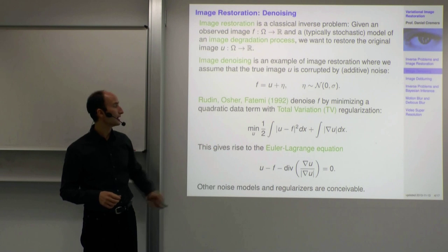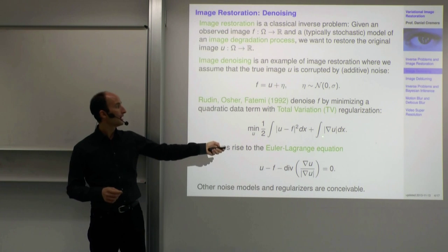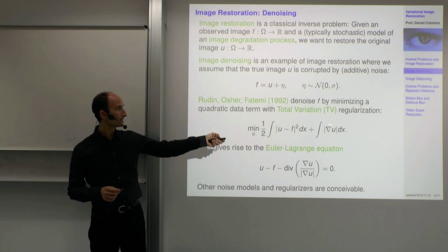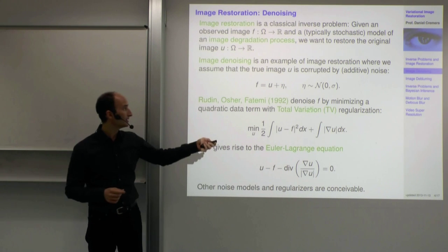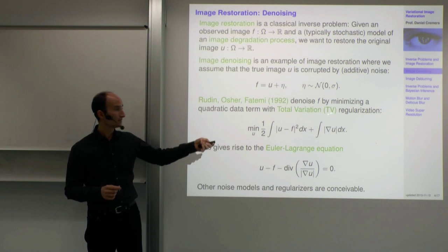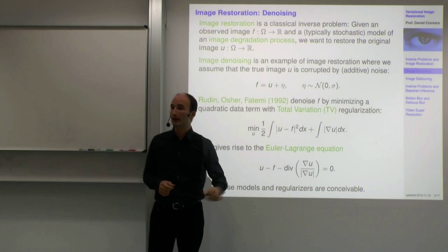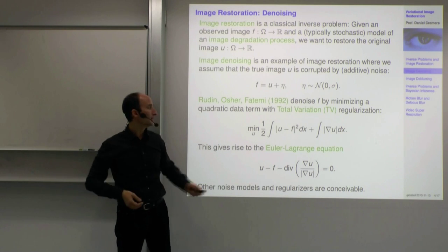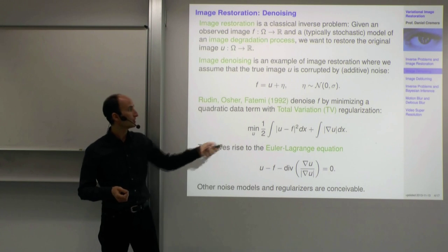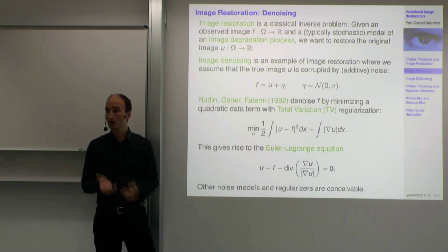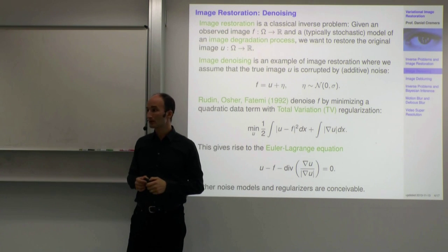It has a quadratic data term, and in contrast to what we discussed before, a regularity term called the total variation. This regularizer is extremely popular, and one reason is that it's convex — this norm is a convex function, and the integration is a summation of convex functions, so the overall expression is convex in U. The data term is also quadratic and convex, so the overall cost function is convex, which means we can minimize it globally. Setting up the Euler-Lagrange equation gives only one solution.